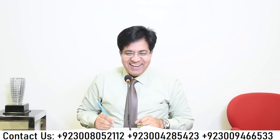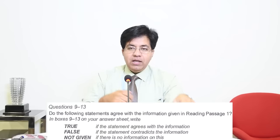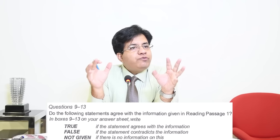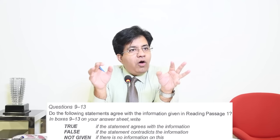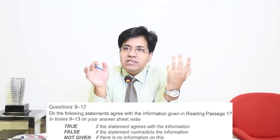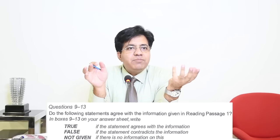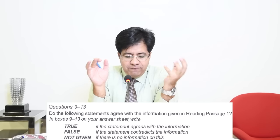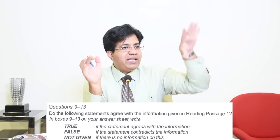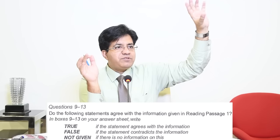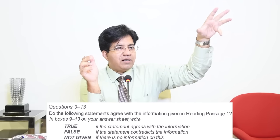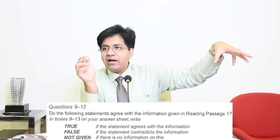Good, questions 9 to 13 - True, False, Not Given. Please be attentive; I'll give you some good tips for True, False, and Not Given. The first thing is: True, False, Not Given questions are always in order. Questions and answers are in order, so I call them Type A questions. For example, questions 9, 10, 11, 12, 13 - you'll find them all in order: first paragraph, second paragraph with two answers, third paragraph with the next answer, and so on.